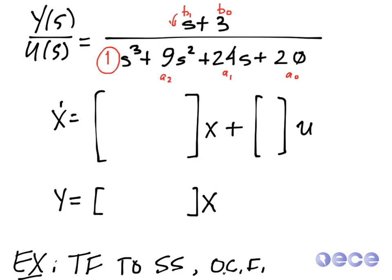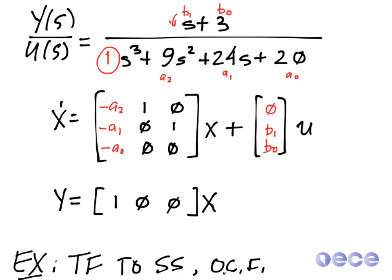If you've already labeled your coefficients as a0, a1, a2, b0, and b1, now we can use inspection. The A matrix has entries: −a2, 1 in the first row; −a1, 1 in the second row; and −a0, 1 in the third row, with 1s on the appropriate off-diagonals. The B matrix starts with b0, then b1, and then we fill in zeros everywhere else. And we end up with [1, 0, 0] for the C matrix.